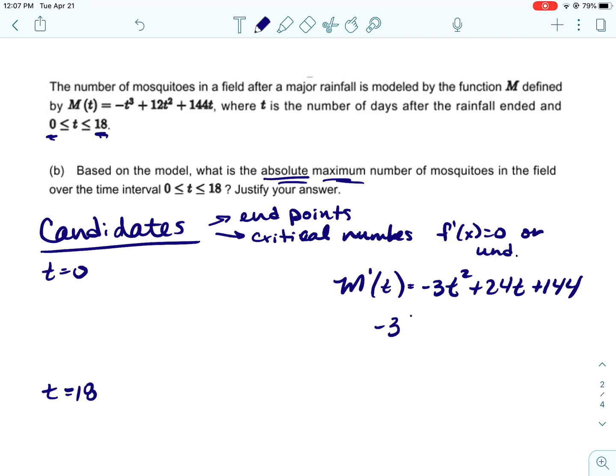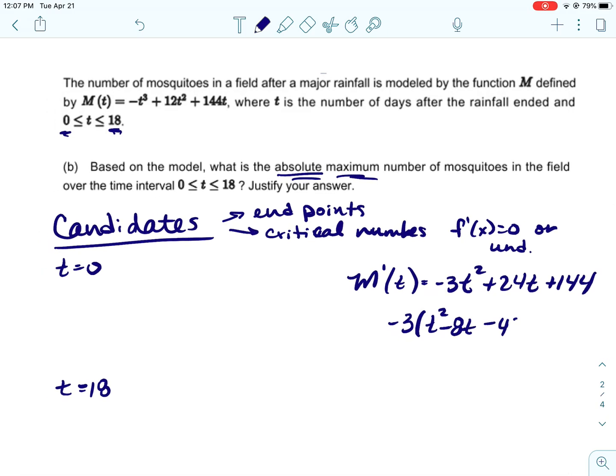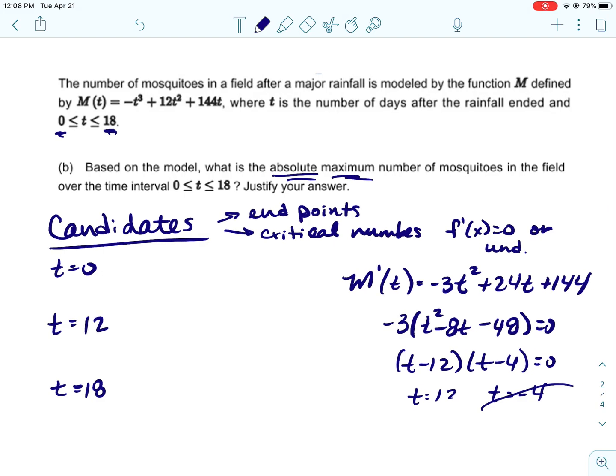All right, to find when the function is zero, we are going to need to find the derivative of the function. And then we'll set that equal to 0. So I'm going to factor out a negative 3 and set it equal to 0 at the same time. So we do get two critical numbers, but the critical number negative 4 is not in our interval and doesn't really make sense because negative 4 days before the rain ended would, I guess, be during the rain. But it doesn't really make sense.